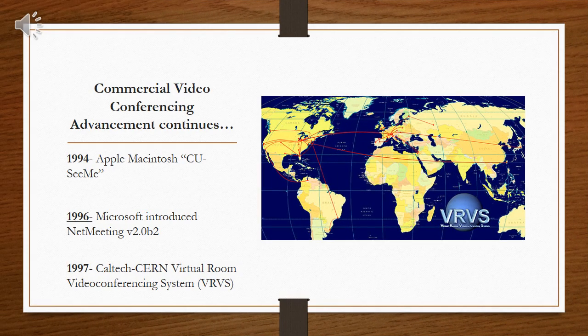Over the next six years, more companies found their way into the video conferencing market. In 1994, Apple Macintosh discovered their CUCMe system. In 1996, Microsoft answered this by introducing the NetMeeting system. And in 1997, Caltech introduced the Virtual Room video conferencing system.